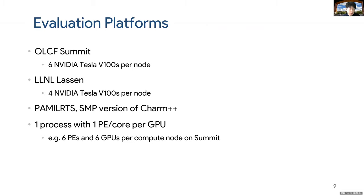To evaluate the performance impact of our approach—applying over-decomposition and achieving computation-communication overlap to improve application performance—we use two leadership-class systems. One is Summit at Oak Ridge National Laboratory, which has six GPUs per node. The other is Lassen at Lawrence Livermore National Lab, which has four GPUs per node. We use the PAMILRTS and SMP version of Charm++, and here we use one process with one PE and one CPU core per GPU. On Summit, for example, we use six PEs mapped to six GPUs per compute node.